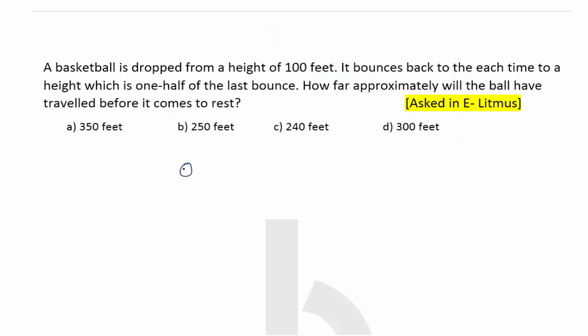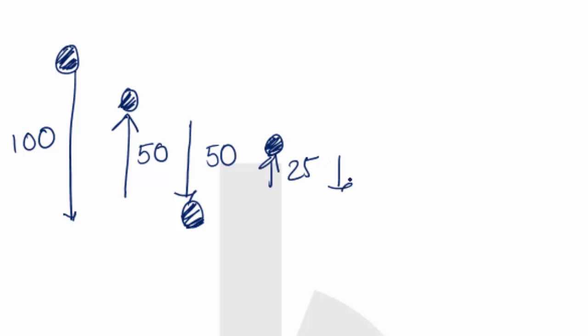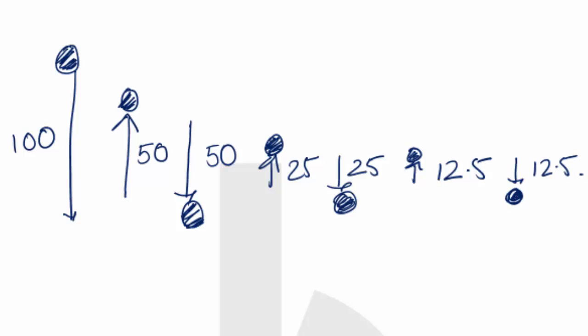Now let's try to see the solution. A ball is dropped from a height of 100 feet. It bounces back to half, which is 50 feet, then comes back down 50 feet. Again it bounces back to half, that is 25 feet, comes back down 25 feet. Again it goes up 12.5 feet, comes back down 12.5 feet, and so on until it comes to rest.